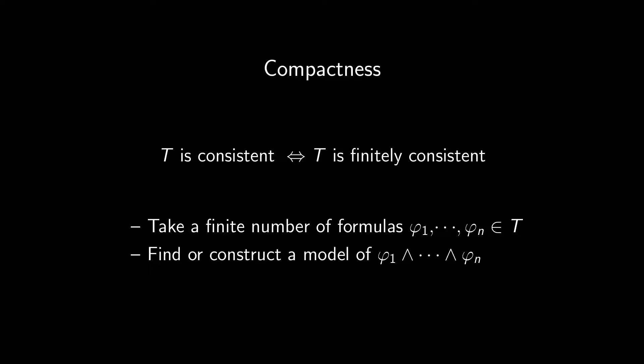Compactness is the final smash of model theory. And it's the main reason why we only do first order, really, because in second order it doesn't really work. It says, a first order theory is consistent, if and only if it is finitely consistent. Ok, so you take a finite number of formulas from T. You prove they are consistent by finding or more often constructing a model of all these formulas at once. And provided you can do that for any finite collection of formulas, well, compactness guarantees a model of the full theory.